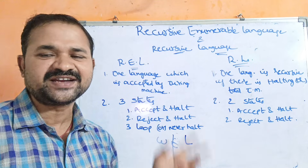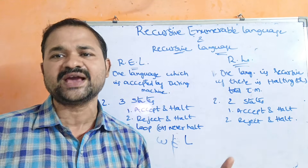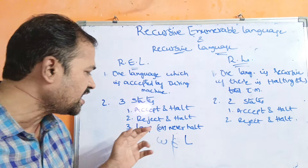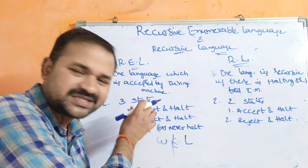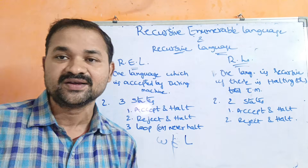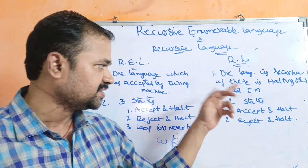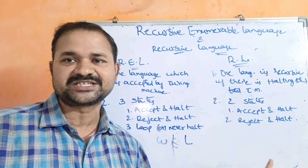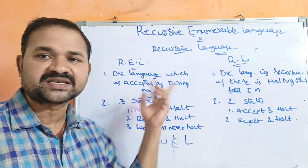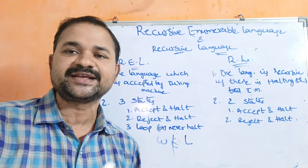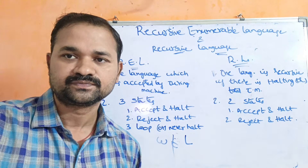So this is the major difference between recursive enumerable language and recursive language. In recursive enumerable language we may have loop also, which can be called as never halt. Whereas recursive language has only two states — accept state or reject state. In recursive enumerable language, in addition to accept and reject, we may have loop or never halt also.